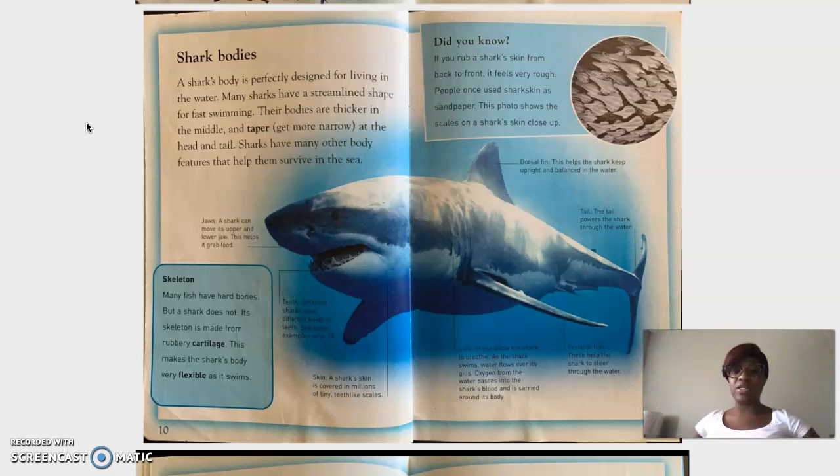So they're telling me that a shark's body is more thicker in the middle. And as the taper, which is like a long stream behind, like from their front to their back, it gets more narrow. So smaller, narrow means smaller at the head and at the tail. Sharks have many other body features that help them survive in the sea.